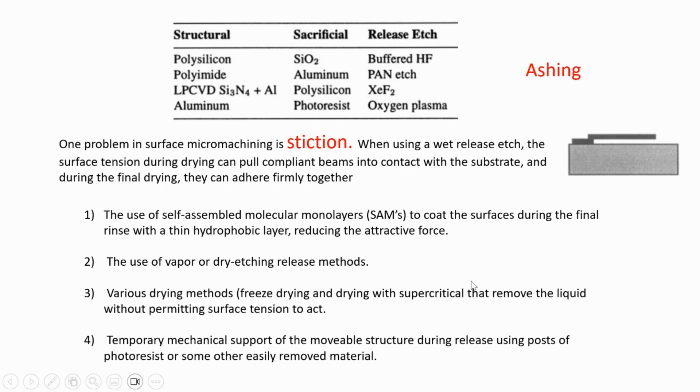Fourth is temporary mechanical support of the movable structure during release using posts of photoresist or some other easily removed material. You can put photoresist here giving it support so it doesn't stick, then do oxygen plasma ashing to remove the photoresist.